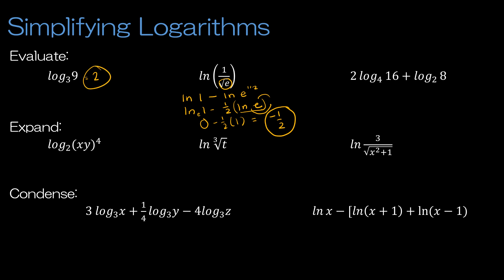Next: log base 4 of 16 — 4 to what power is 16? That's 4 to the second power. And log base 2 of 8 — 2 to what power is 8? That's 2 to the third power. So this is 2 plus 3, which equals... wait, 4 squared is 16 so that's 2, and 2 cubed is 8 so that's 3 — giving 4 plus 3 which is 7. I also want to point out that I could not condense these into a single logarithm using our properties because this is base 4 and this is base 2 — they must have the same base to apply those properties.